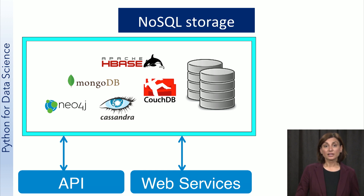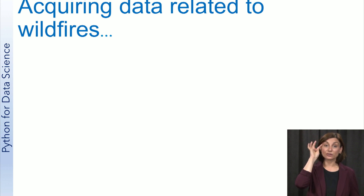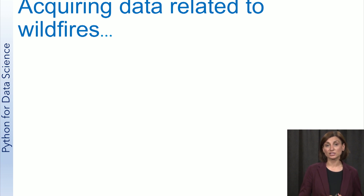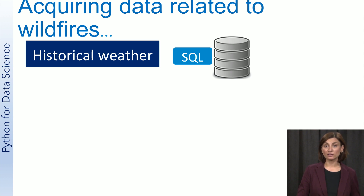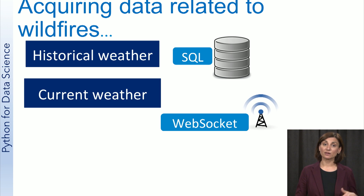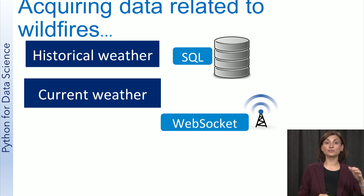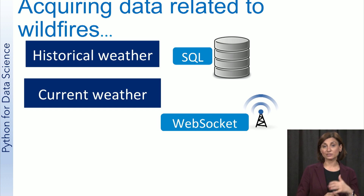In one application from our work at the San Diego Supercomputer Center, we use wildfire data analysis to predict fire direction and rate of spread. This project requires acquiring data using several different mechanisms. The project stores historical sensor data from weather stations in a relational database, and we use SQL to retrieve this data to create models that identify weather patterns associated with fire weather conditions. To determine whether a particular weather station is currently experiencing fire weather conditions, we access real-time data using a WebSocket service. Once we start listening to this service, we receive weather station measurements as they occur.